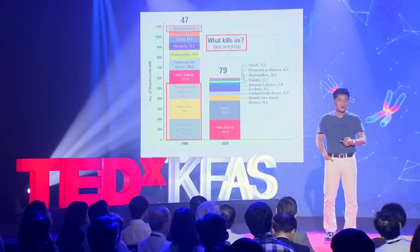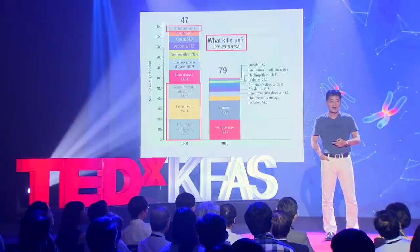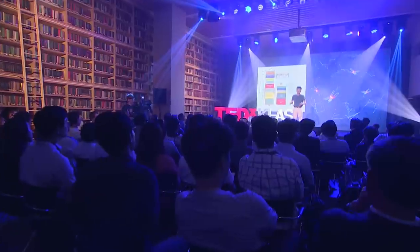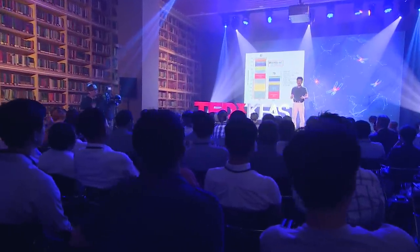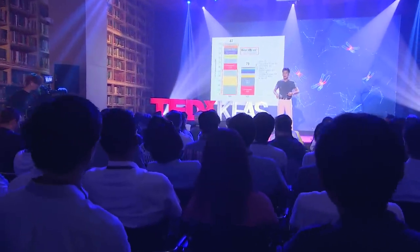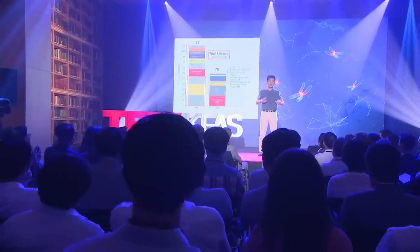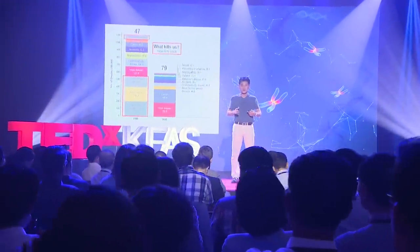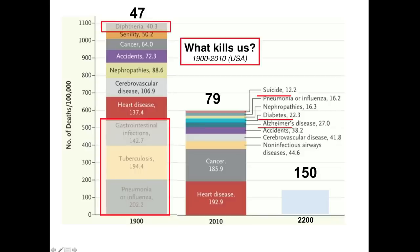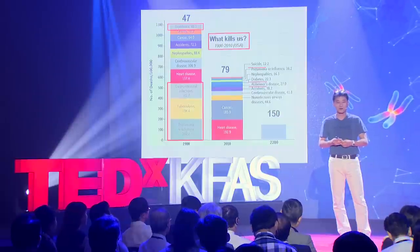Now, if you look at the list of things that are killing us today, they are difficult diseases — cancers, cardiovascular disease. These are not caused by infection; they are caused by breakdown of internal systems. Cellular messaging systems inside your body break down, and that's when disease starts to occur. And a couple of other diseases underlined in red — suicides, Alzheimer's, diabetes — these are lifestyle diseases, and they are very difficult to address.